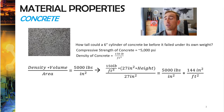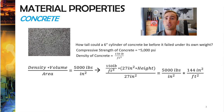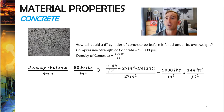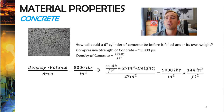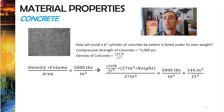We divide this by the cross-sectional area — and as you can see, the 27 inches squared cancels out. So the size or shape of the concrete cylinder ends up being irrelevant. We can now set that equal to the compressive strength of concrete, which is 5000 pounds per square inch.